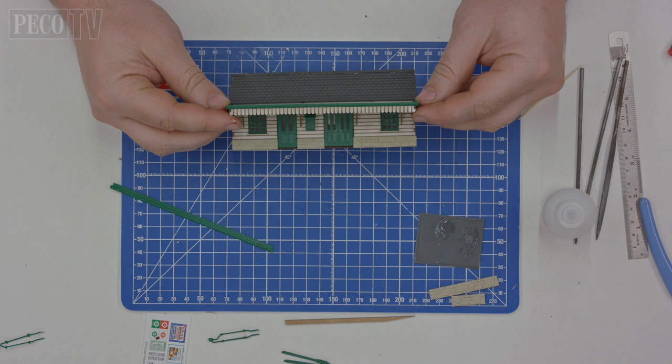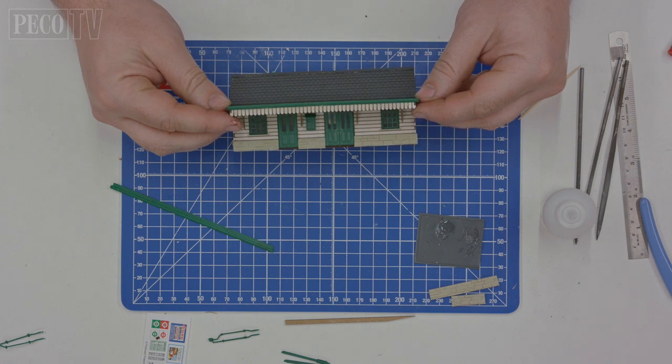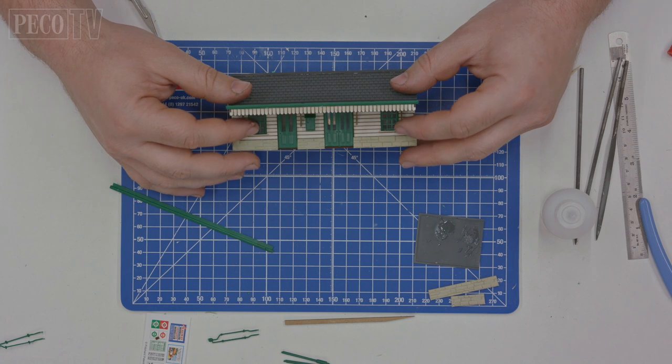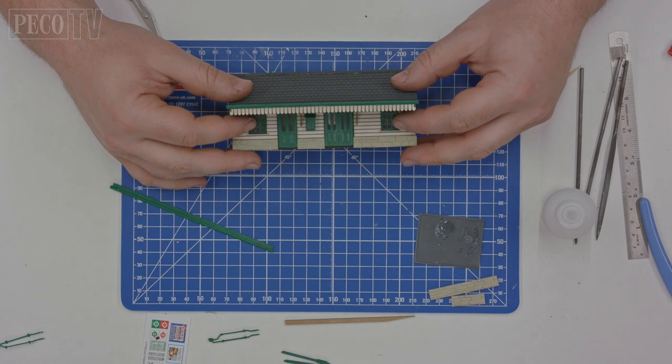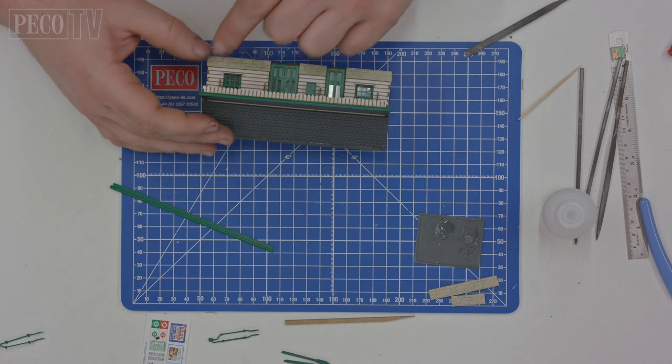Now is also a good time to attach the chimney pot and the guttering to the rear of the building. But leave attaching the downpipes till after you've painted your building.